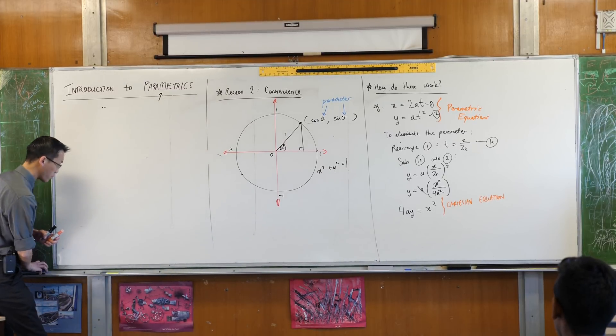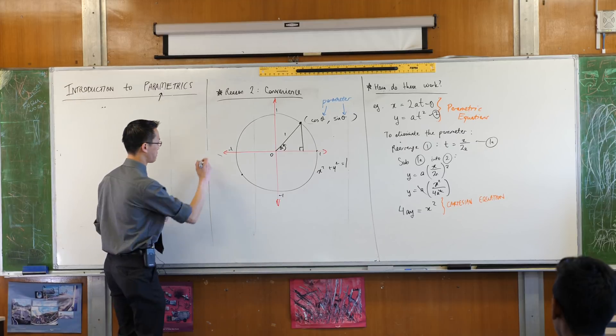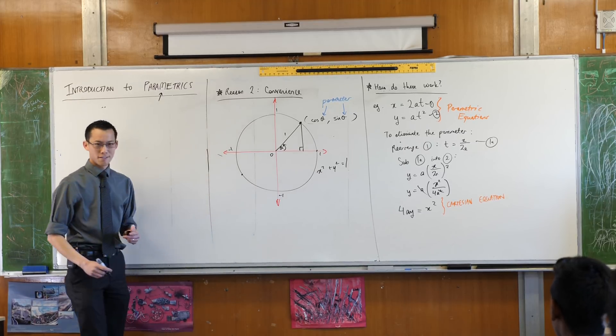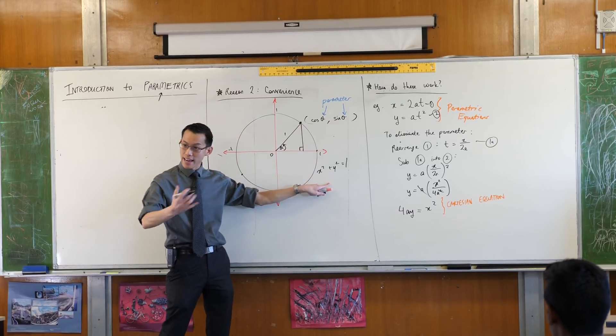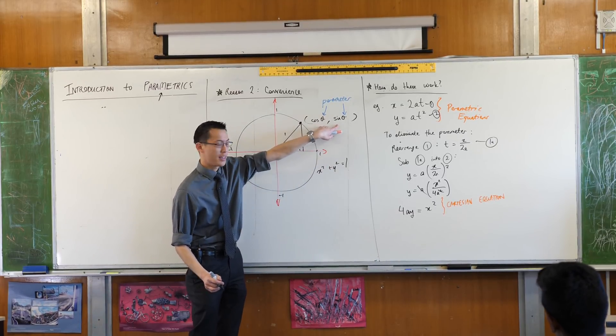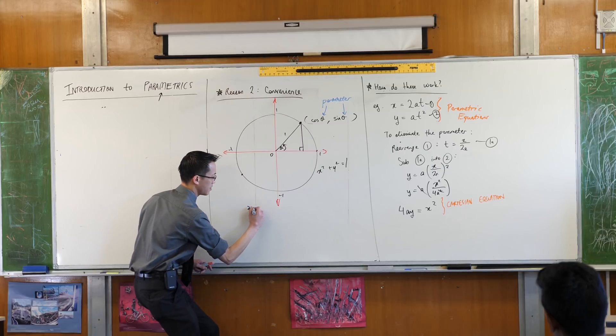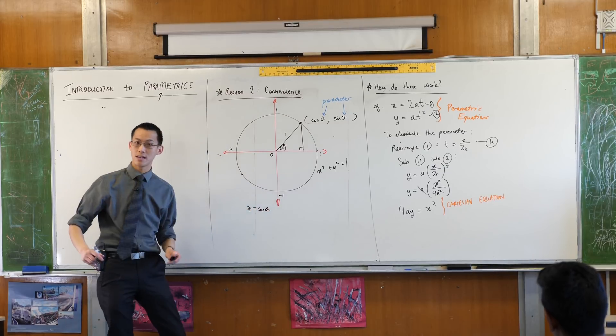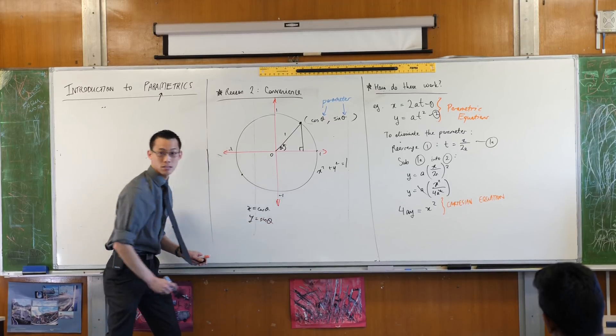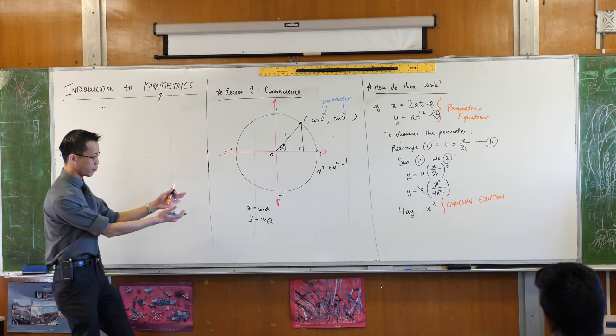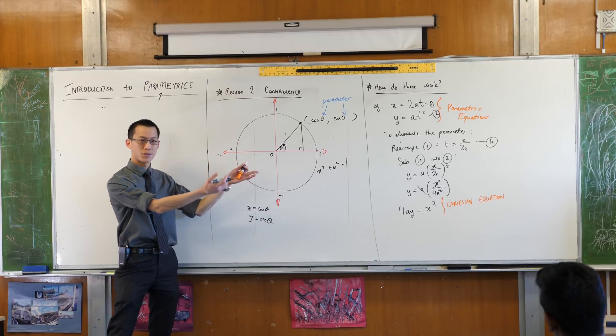You might need to think back to when we did an auxiliary angle. The Cartesian equation, this, we can get from the parametric equations up here. See how x is defined as cos θ and y is defined as sin θ, like that? So these are the parametric equations for the unit circle.